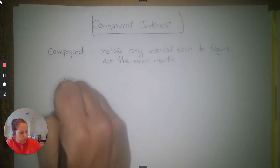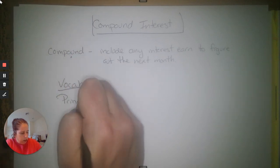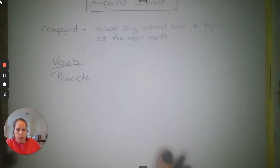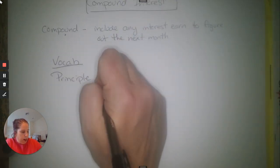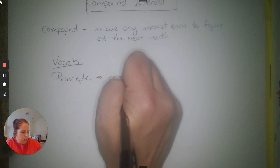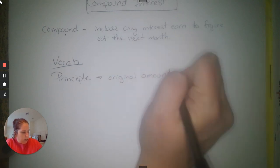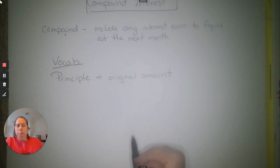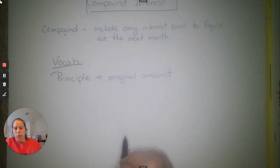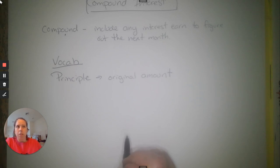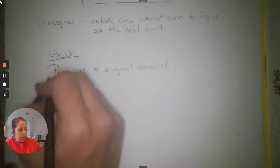You need to make sure you know some vocabulary. The first word is 'principal' — not like a school principal, that's spelled differently. The principal is the original amount. On a mortgage, the principal is the original amount owed on the house. If you're investing money, the principal is how much money you put into the account first.